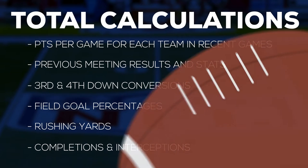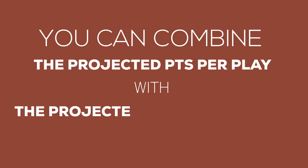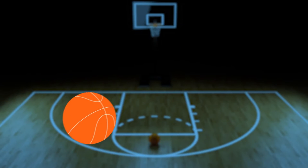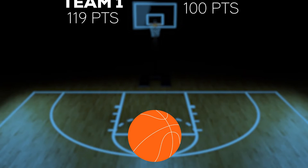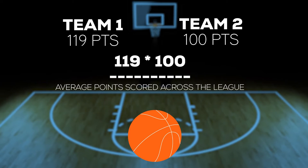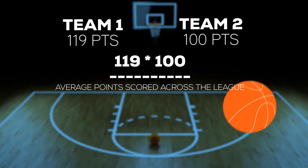In college football, you can combine the projected points per play with the projected number of plays for each team to come out with a projected point total. In basketball, it's very similar but sometimes very easy. You can take both teams' average points — both for and against — multiply them together, and then divide by the average points scored across the league, and that should give you something close to the total.